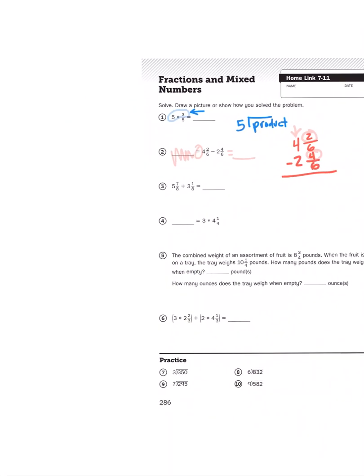For problem number three of course it's an addition problem with mixed numbers so you're going to do the same thing. You're going to put 5 and 7 eighths on top of 3 and 1 eighths and then add keeping in mind that you might have to do some regrouping here as well.